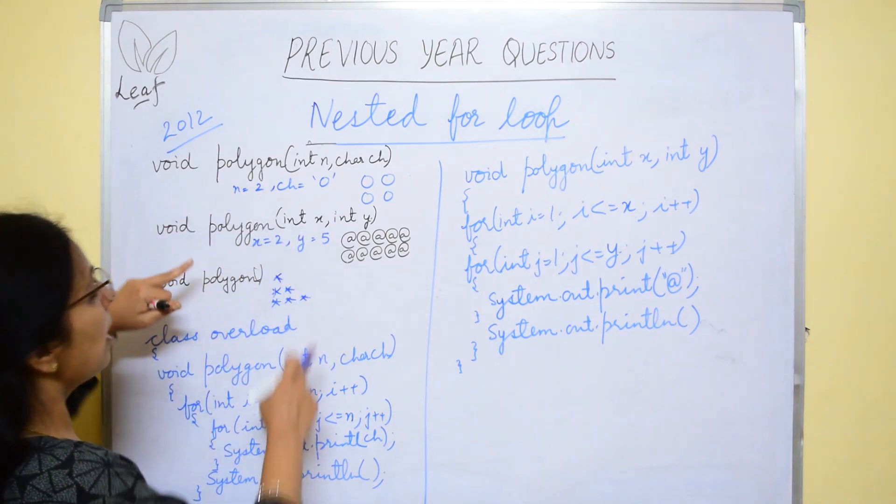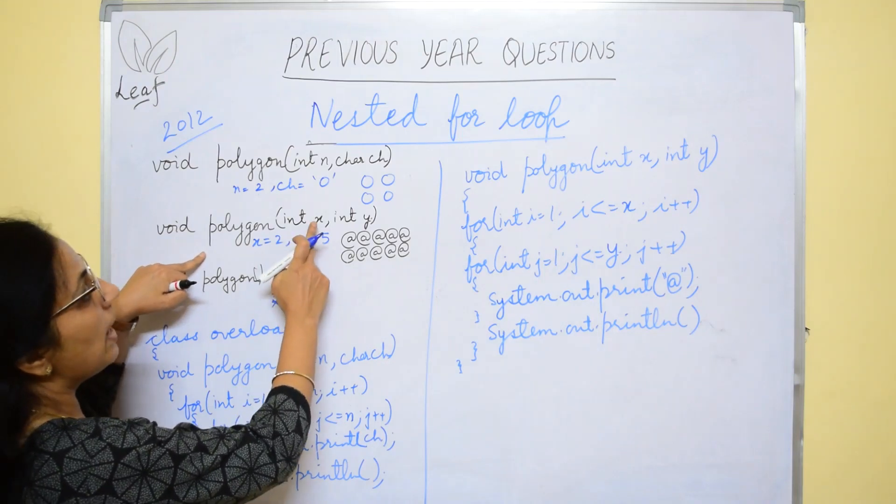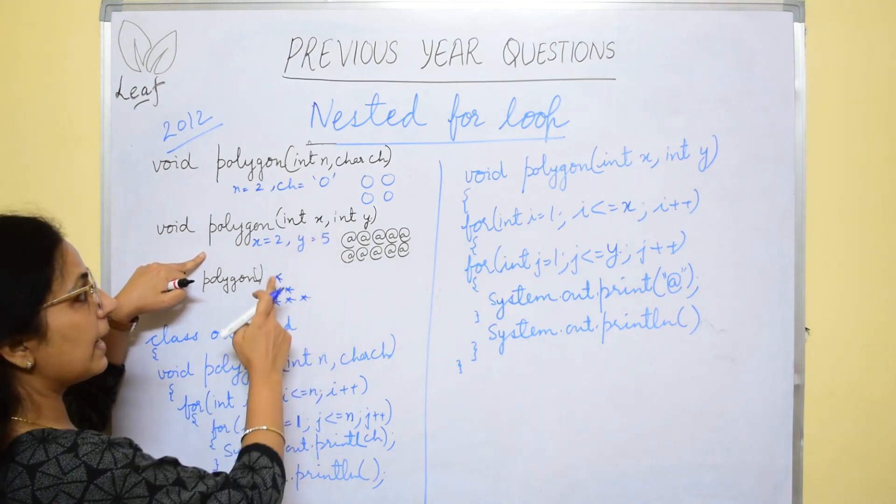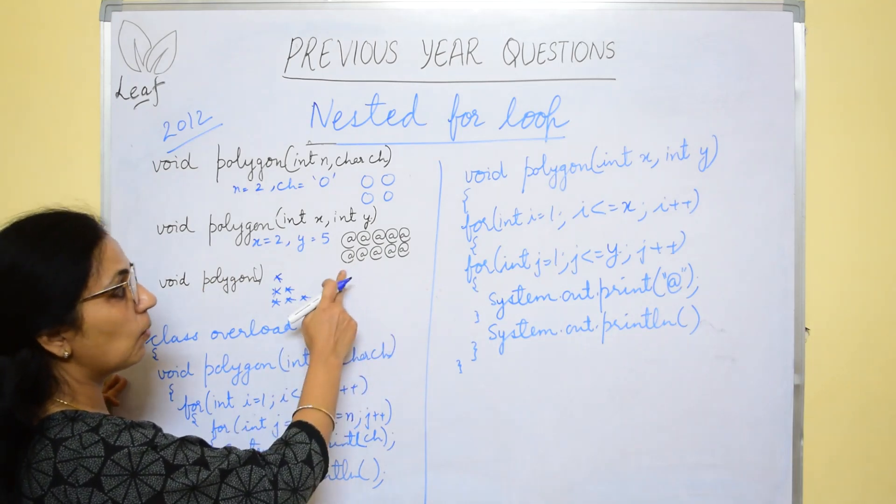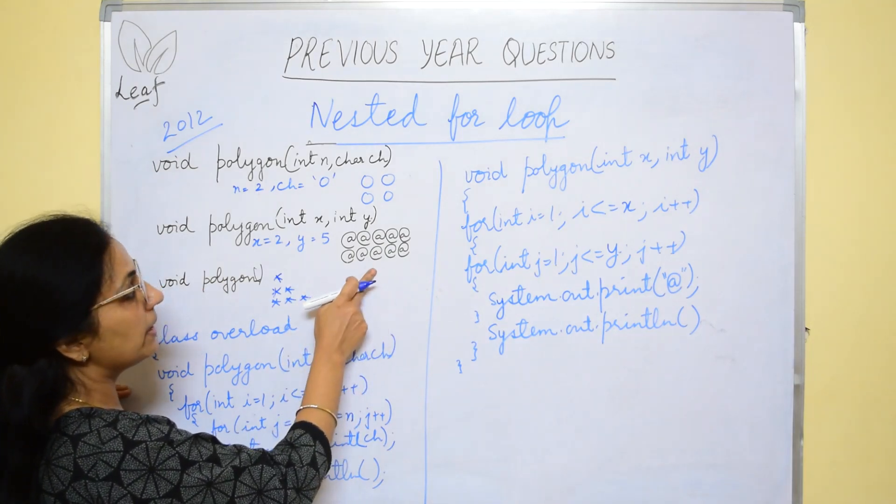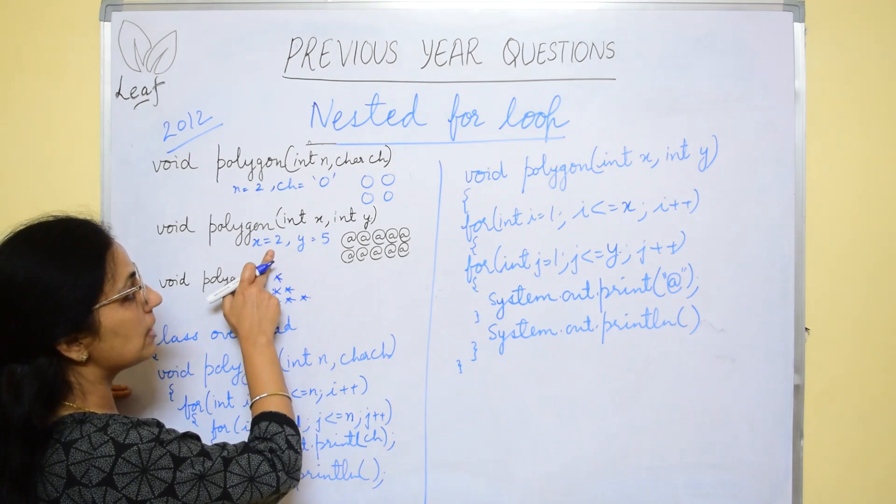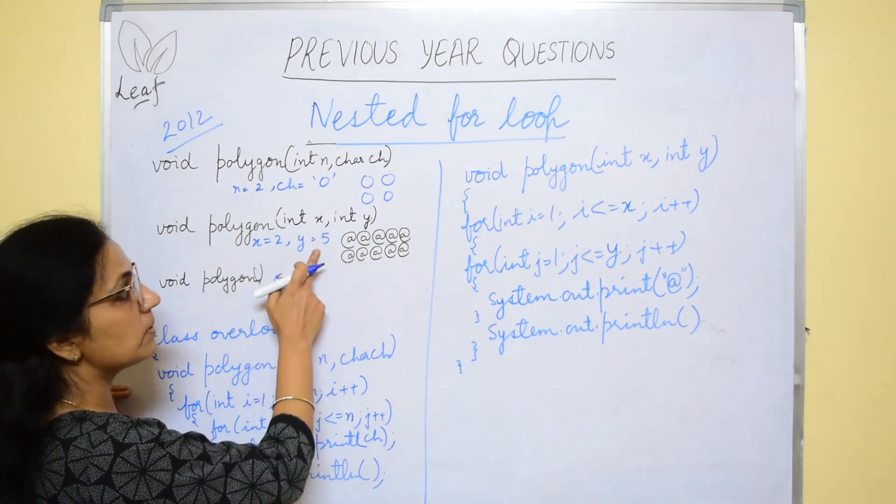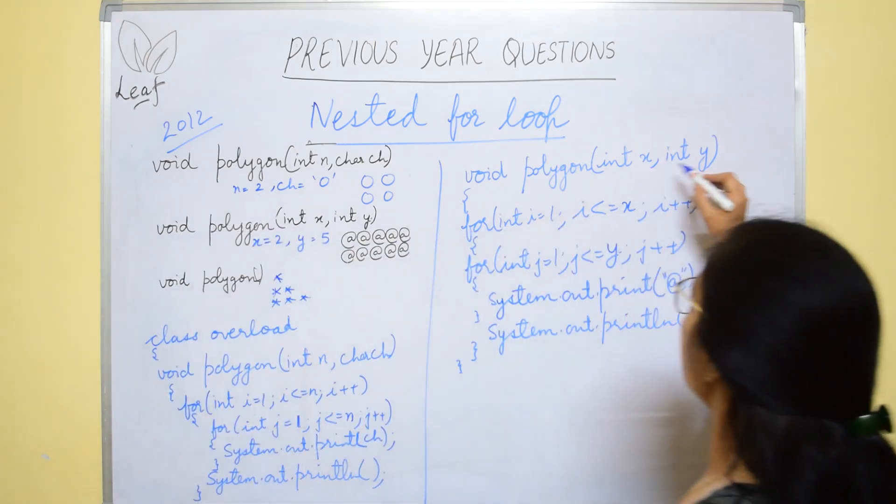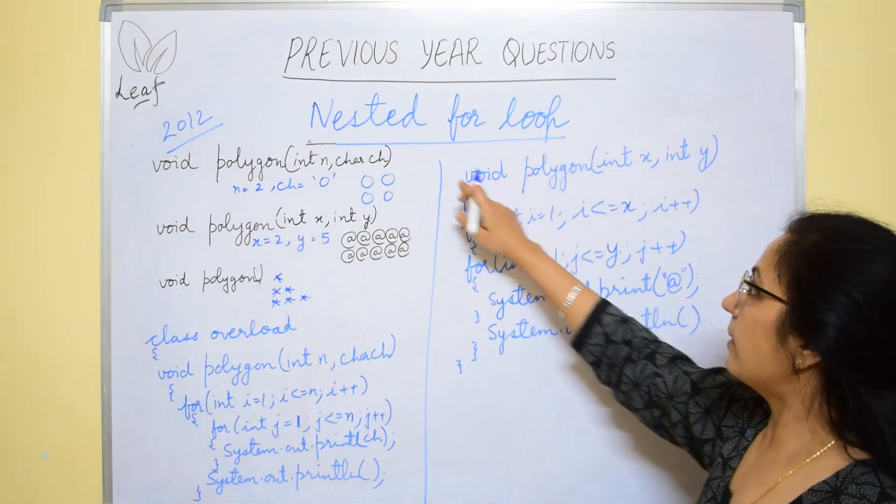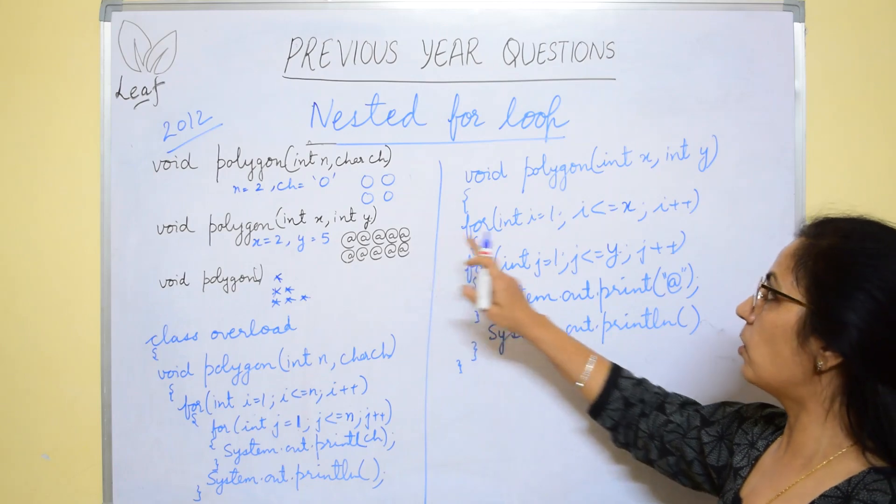Now, let's see the second function, where you have two arguments int x and int y. And what should be the pattern? What should be the output? Rectangular pattern is there. Number of rows are x and number of columns are given in y. So, int x, int y, again this function header is given in the question.